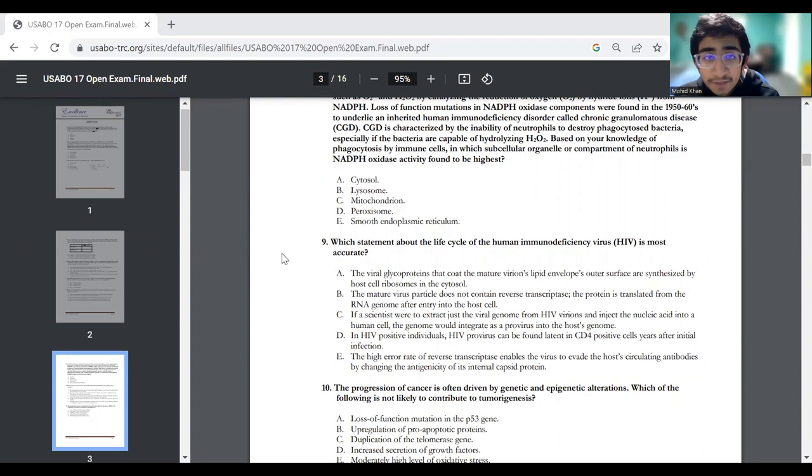Question number nine. Which statement about the life cycle of HIV is most accurate? The viral glycoproteins that coat the mature virions lipid envelopes outer surface are synthesized by host cell ribosomes in the cytosol. And then we continue. So to me, some answers that really popped out were D and E. The high error rate of reverse transcriptase enables the virus to evade the host circulating antibodies by changing the antigenicity of its internal capsid protein.